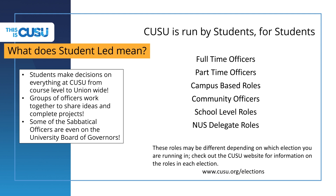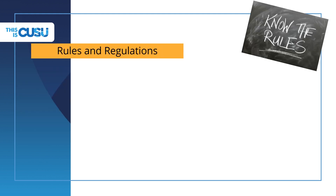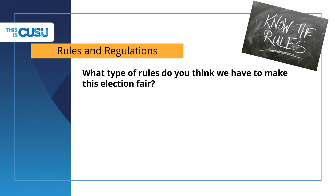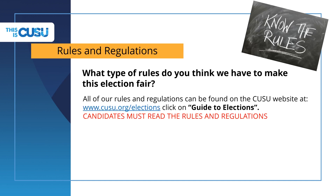Let's move on to some rules and regulations. This helps keep the elections fair and gives everyone a good chance to participate and succeed. All of the rules and regulations can be found online under guide to elections and will be sent to you as part of the candidates pack once you have completed the briefing quiz. You must read the rules and regulations before you begin your candidacy. It is much better to read them now than to skip through and be affected by a rule or regulation down the line.